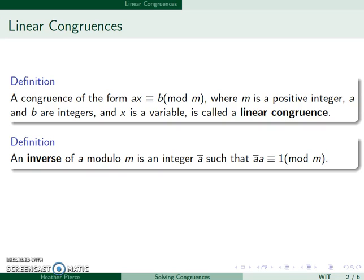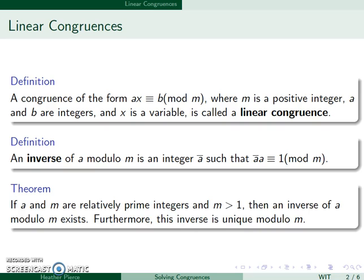We're going to do this by multiplying by the inverse. The inverse of a mod m is an integer a bar, such that a bar a is equal to 1 mod m. If a and m are relatively prime, with m greater than 1, then the inverse exists and is unique modulo m. This only works if a and m are relatively prime to each other, and m is greater than 1.